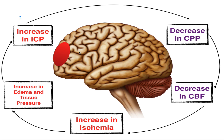The intracranial contents — the stuff inside — in a normal ICP is 10 to 15 millimeters of mercury. We're going to talk about what happens when that increases.